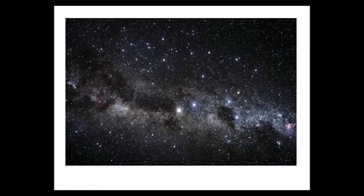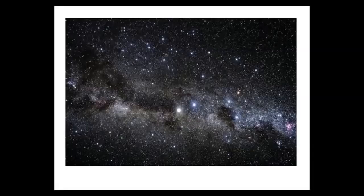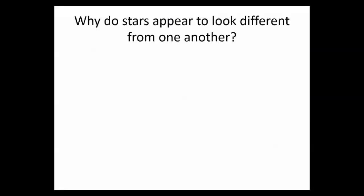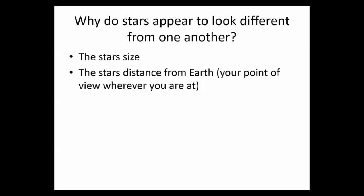Here's a picture of the Milky Way galaxy. All those little dots in there are stars. But how do they look, why do they look different from each other? The first one is the star size. As we just saw from that video, the size can vary quite a bit. How far away from Earth, so where we're looking at them from. And the last one is brightness, which a lot of time has to do with the temperature of the star.